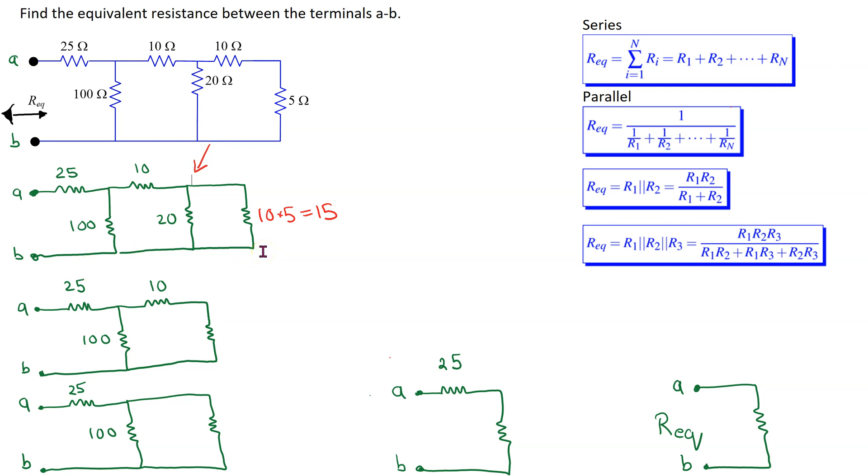The next step is to keep repeating this process. Now we can see that the 15 ohm resistance is in parallel with the 20 ohm resistance. So we need to combine these two resistances, and when we do that, the equivalent circuit reduces to this arrangement. This resistance is given by 20 multiplied by 15 over 20 plus 15, and this comes out to 60 over 7 ohms.